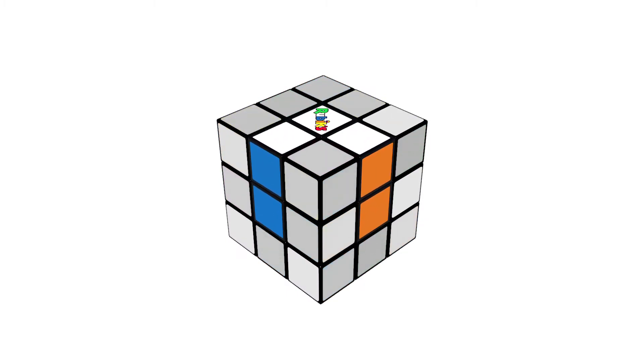The easiest way of solving the white cross is to have these two pieces form in this order.